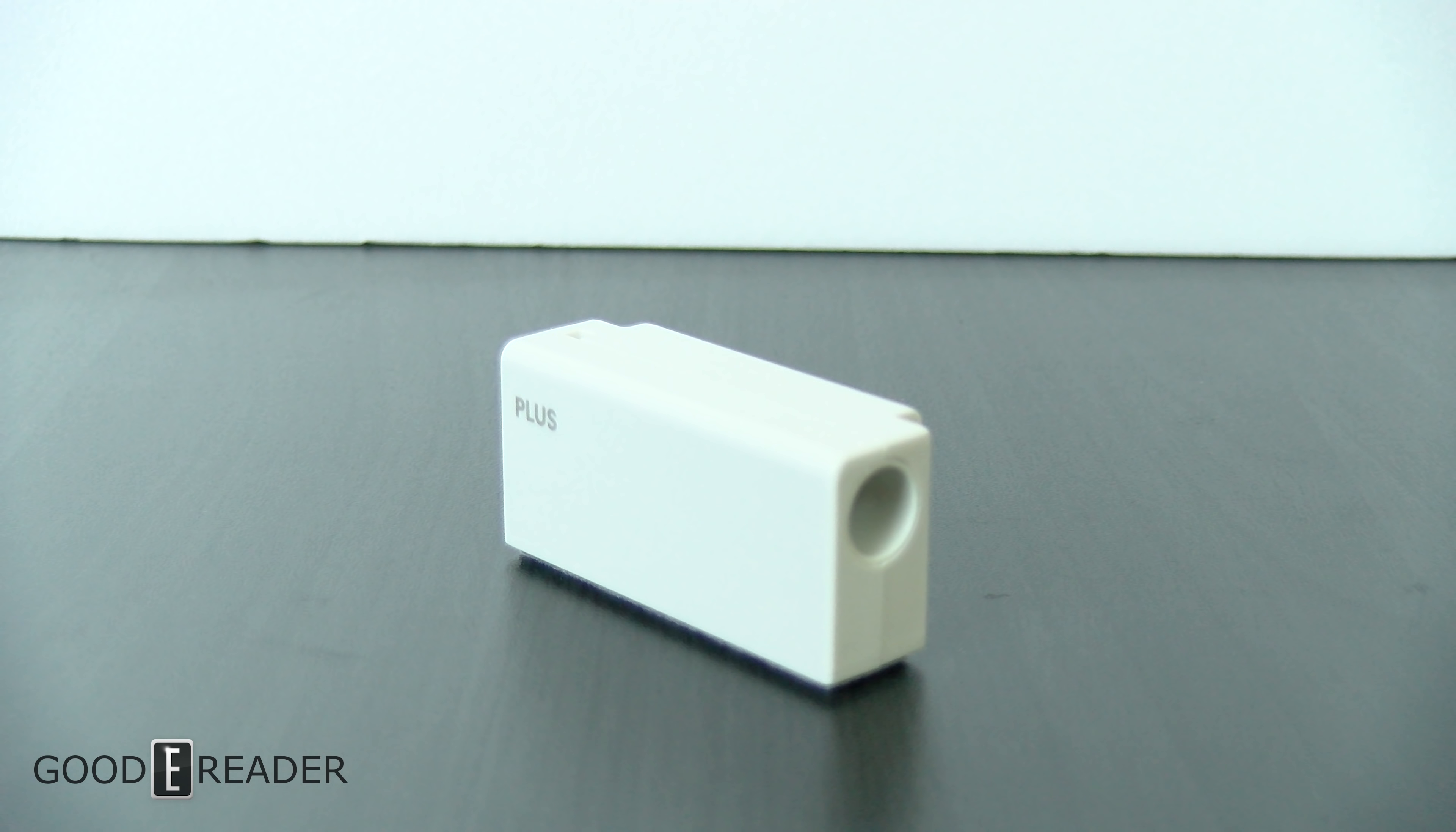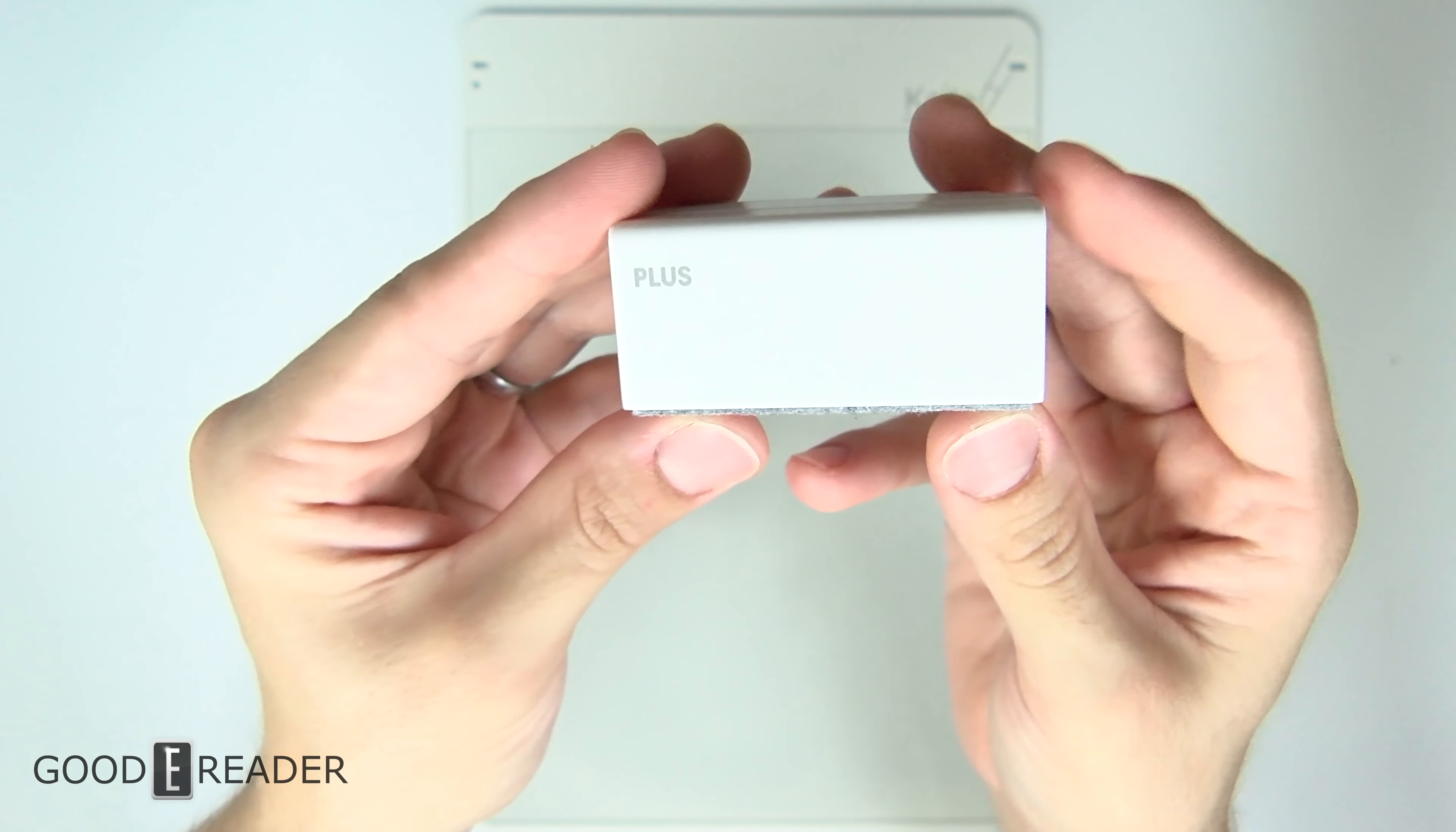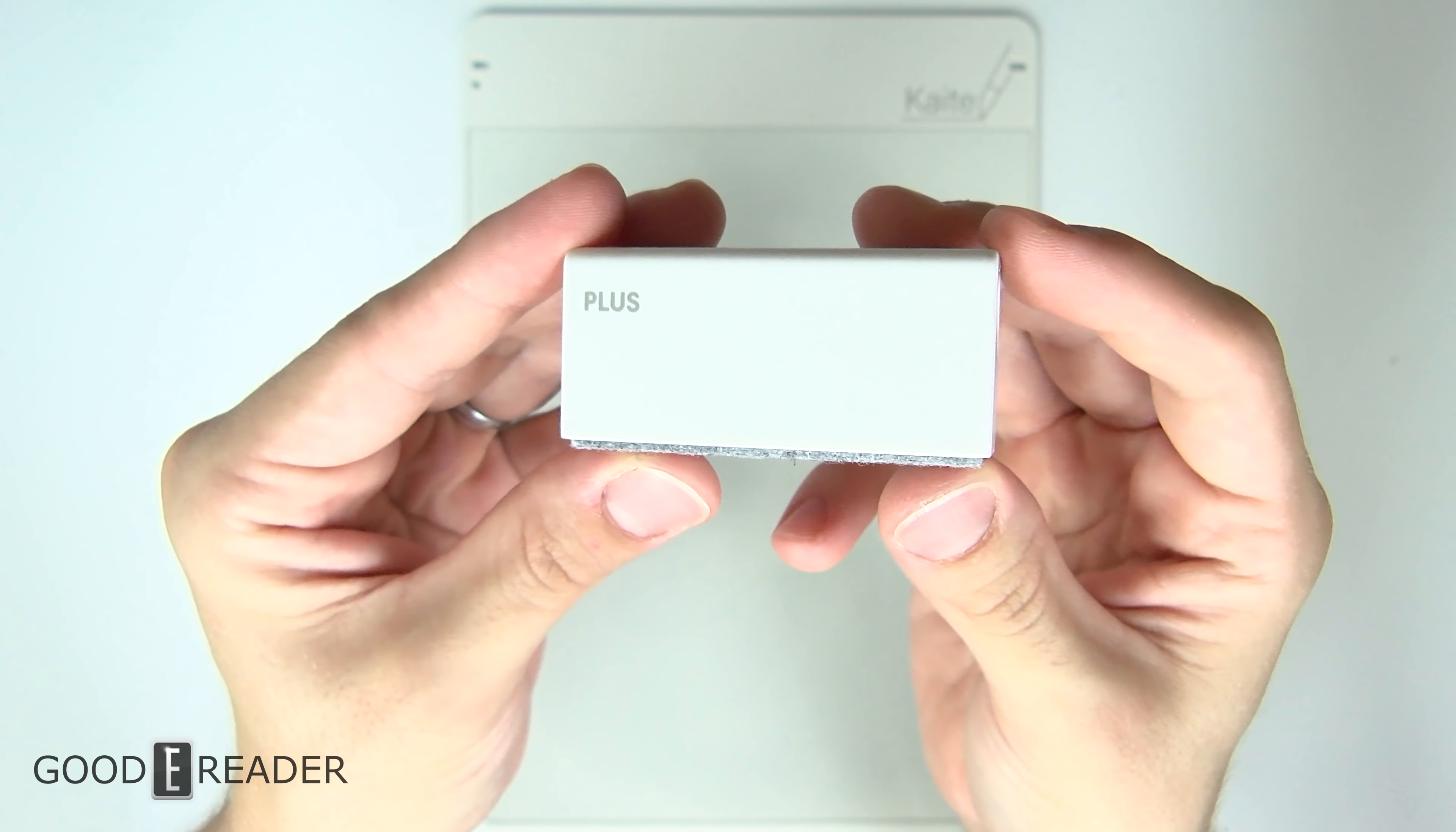The eraser works as an opposing magnet, which basically removes everything on the screen that you have written by scrubbing the screen.